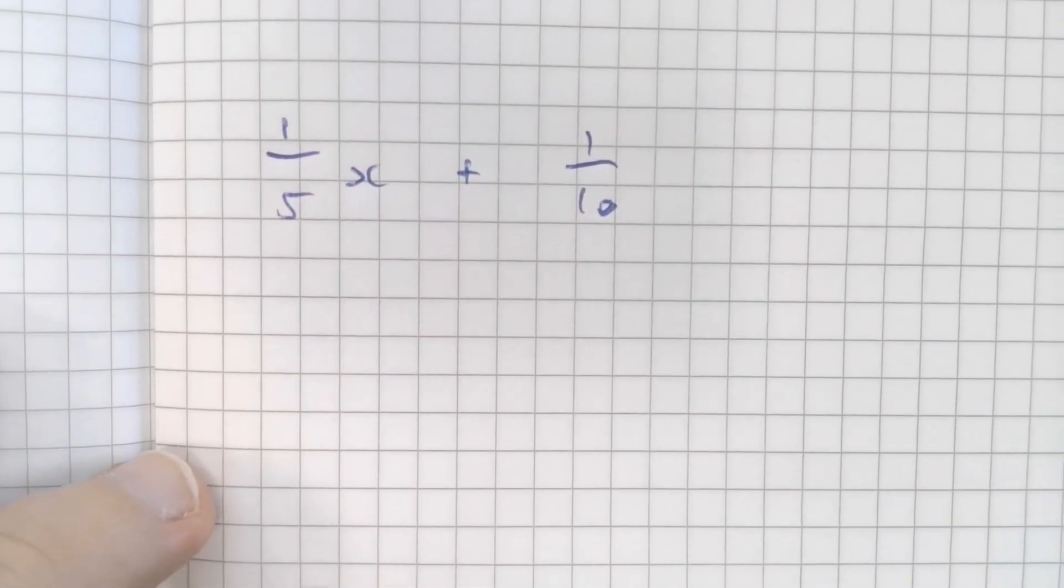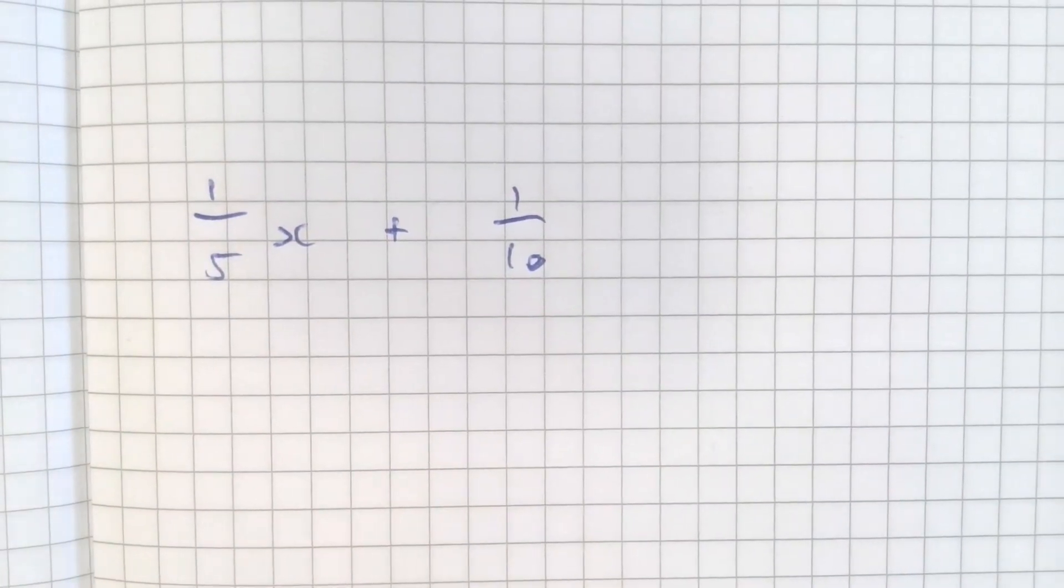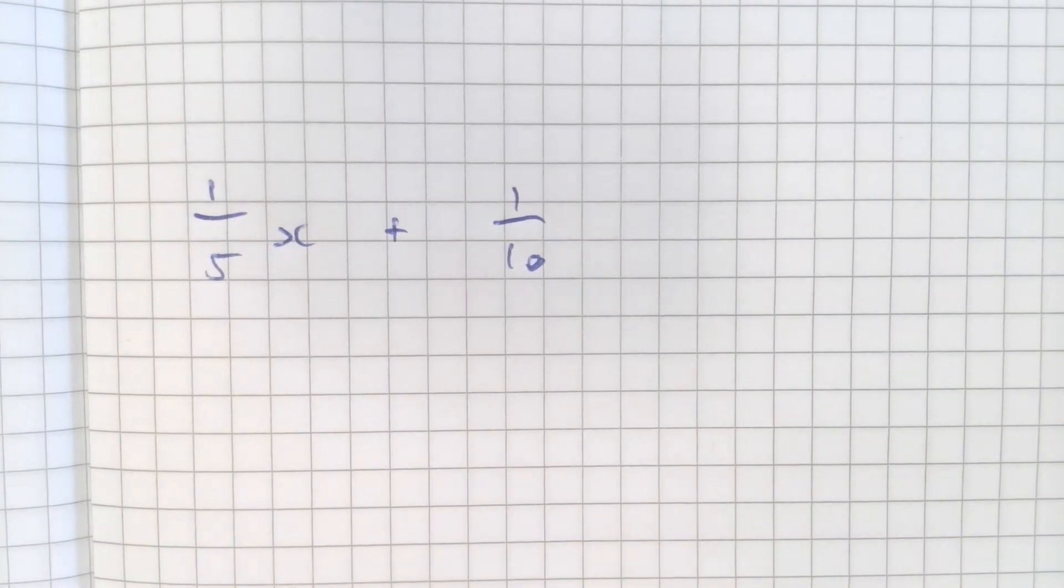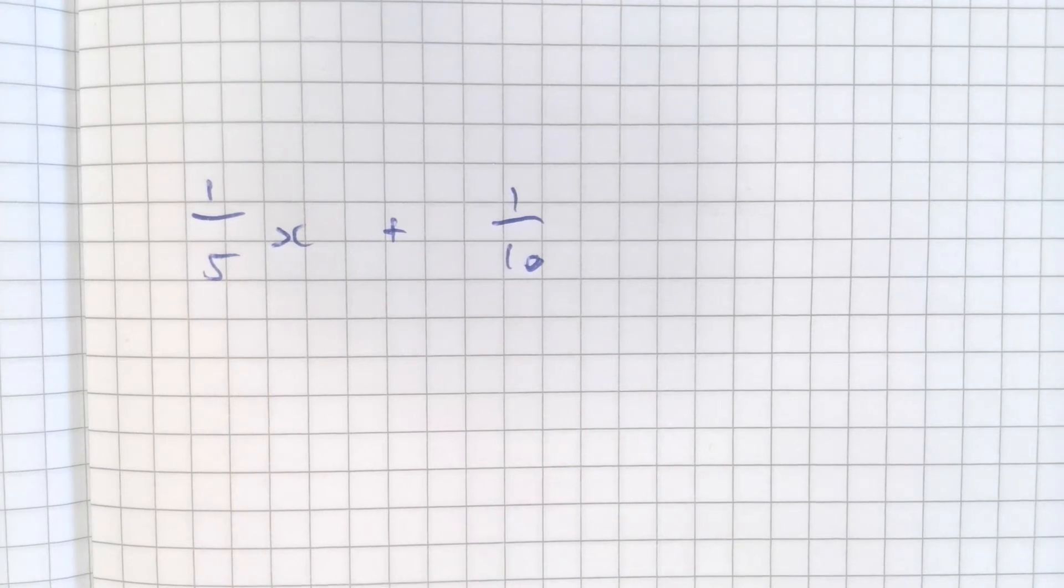Carrying on. A couple more examples and then we'll finish. What happens if the fractions are different, if they don't have the same denominator? With the question above, we had thirds and that was straightforward.